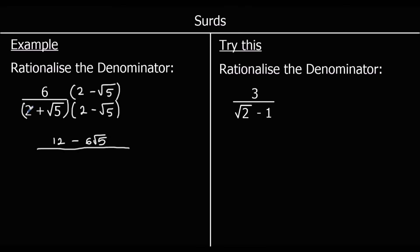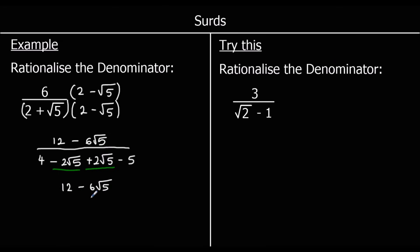Expanding the bottom bracket — 2 times 2 is 4; positive times negative gives negative 2 root 5; root 5 times 2 is 2 root 5; and positive root 5 times negative root 5 is negative — root 5 times root 5 is 5, so that's −5. Collecting like terms on the bottom: −2 root 5 plus 2 root 5 cancel out, leaving 4 minus 5. On the top we have 12 minus 6 root 5, and on the bottom we have 4 minus 5, which is −1.